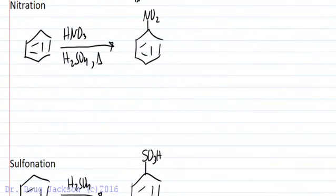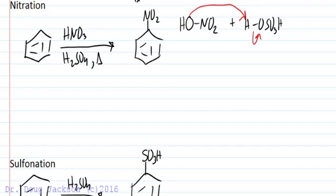With nitration, we form the electrophile a different way. We've got a concoction of nitric acid and sulfuric acid. We're going to take two strong acids, one stronger than the other. Sulfuric is stronger, so we protonate this oxygen forming a good leaving group. We'll form the good leaving group, water, which then leaves forming our nitronium ion. There's our E+, our electrophile.